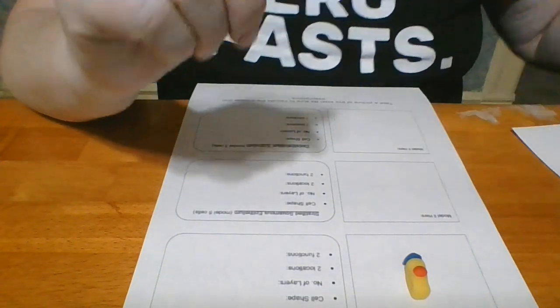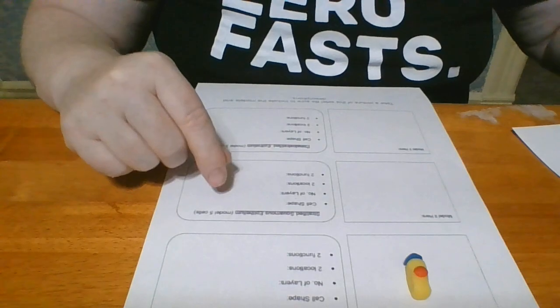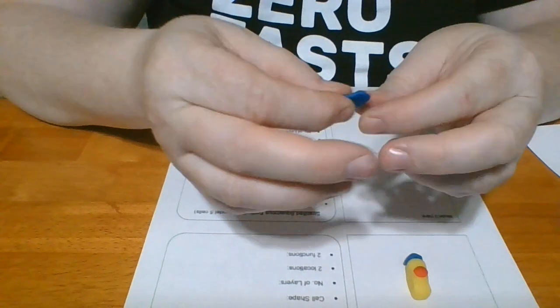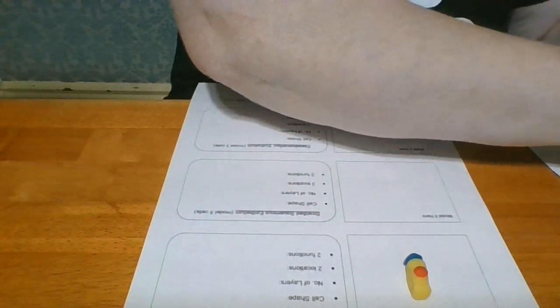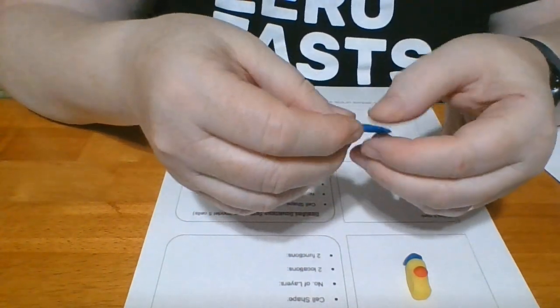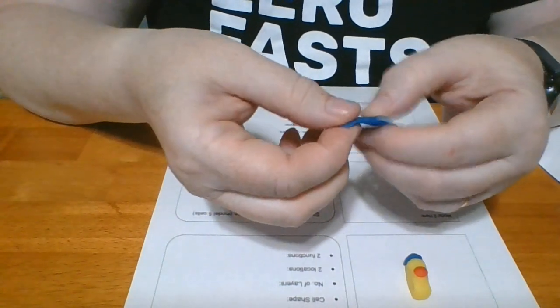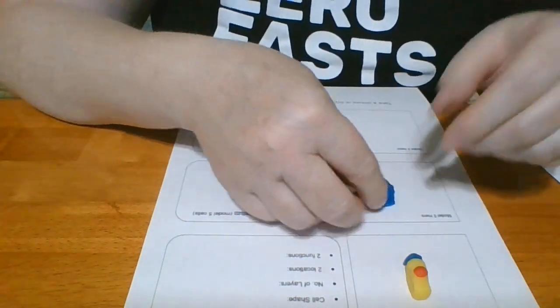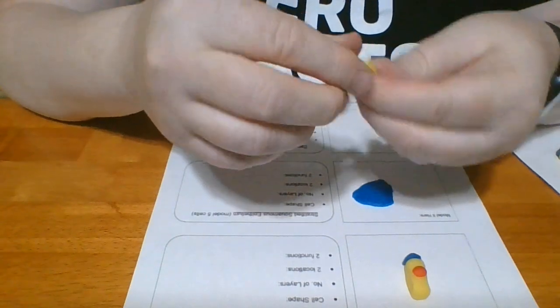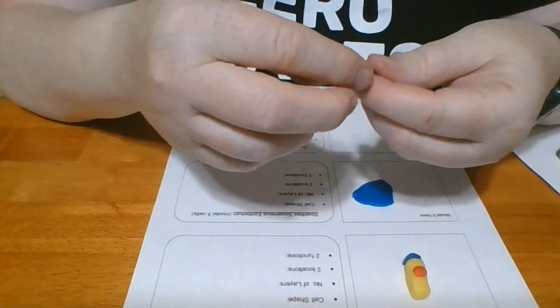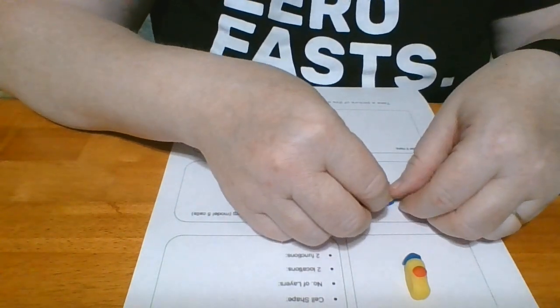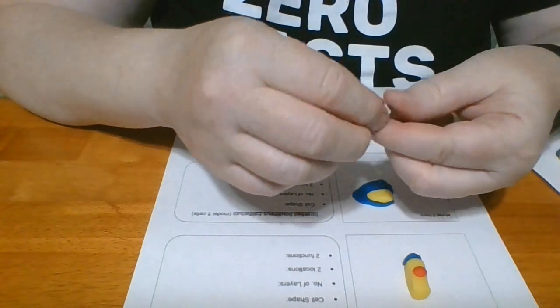So here's our simple columnar epithelium. Next we have stratified squamous. This is the first one where it says I have to model five cells. But stratified means layers. So I need those five cells not all spread out on one against the basement membrane, I'm going to stack them. All right, so here is my basement membrane.